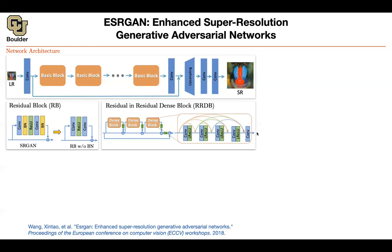Within a block you don't change the resolution, which is why you can simply concatenate. There are translation layers where you change the resolution, but everything stays low resolution up until the upsampling layer — to keep these operations cheap. And then there is residual-in-residual: a big outer residual connection and smaller inner residual connections. For super resolution these residual connections are really important because the low resolution image is already a good approximation of the high resolution image — you are just missing some details.